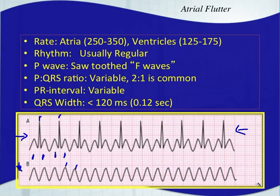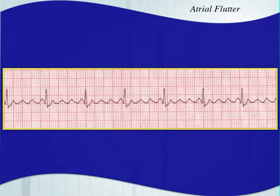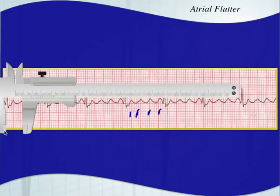We're going to have to revisit atrial flutter because it's such a difficult one to identify. A lot of times with these two to one flutters, people will see the first flutter wave as a T wave and the next as a P wave and think it's a sinus tachycardia. The way to identify it is by looking at many examples and covering up those QRS complexes to see that sawtooth pattern. Here's a good example — this one is a four to one atrial flutter. You have four flutter waves for every QRS complex, and covering up those QRS complexes makes it easier to see the sawtooth pattern.